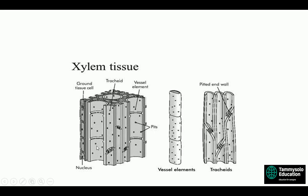In the phylogenetic development of the tracheid, the cell diameter increases and the wall becomes perforated by large openings, allowing water to move from cell to cell without resistance. The openings in vessels are called perforations; the area of perforation is called the perforation plate. Vessels are formed from procambium cells or derivatives of cambium by the fusion of cells end to end. In the diagram, tracheids can be seen along with pits; the vessel elements have perforations — perforation plates — that allow water to flow through.